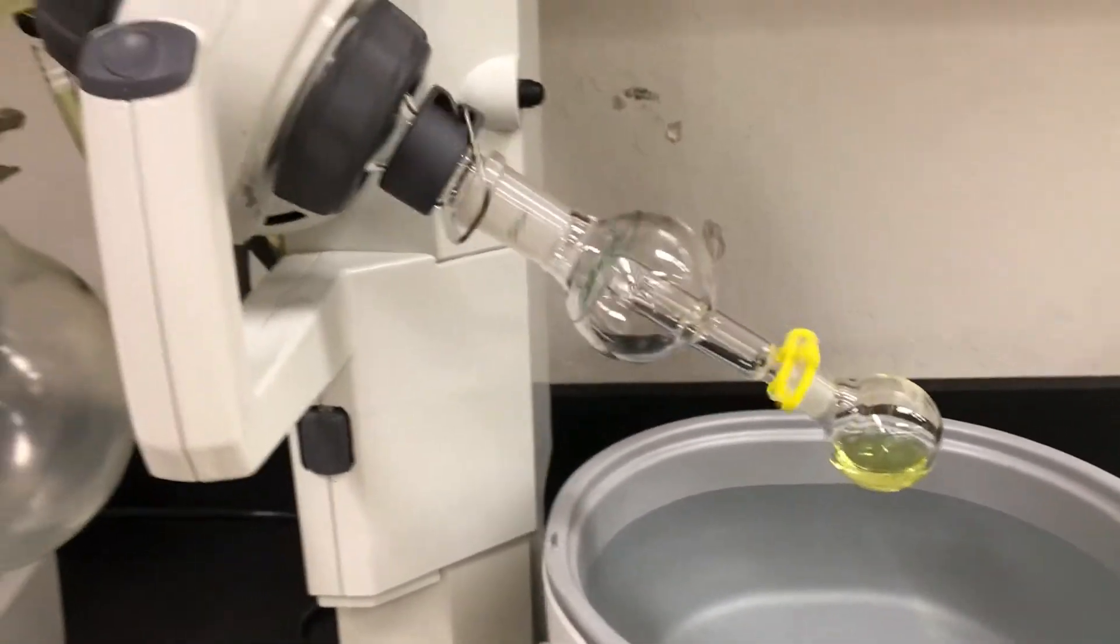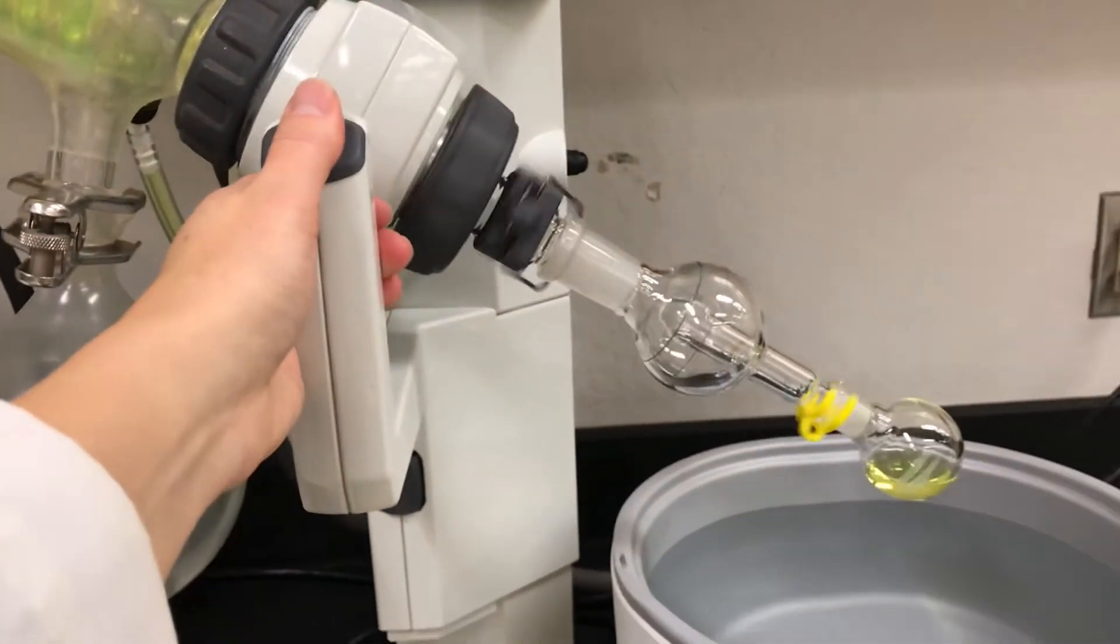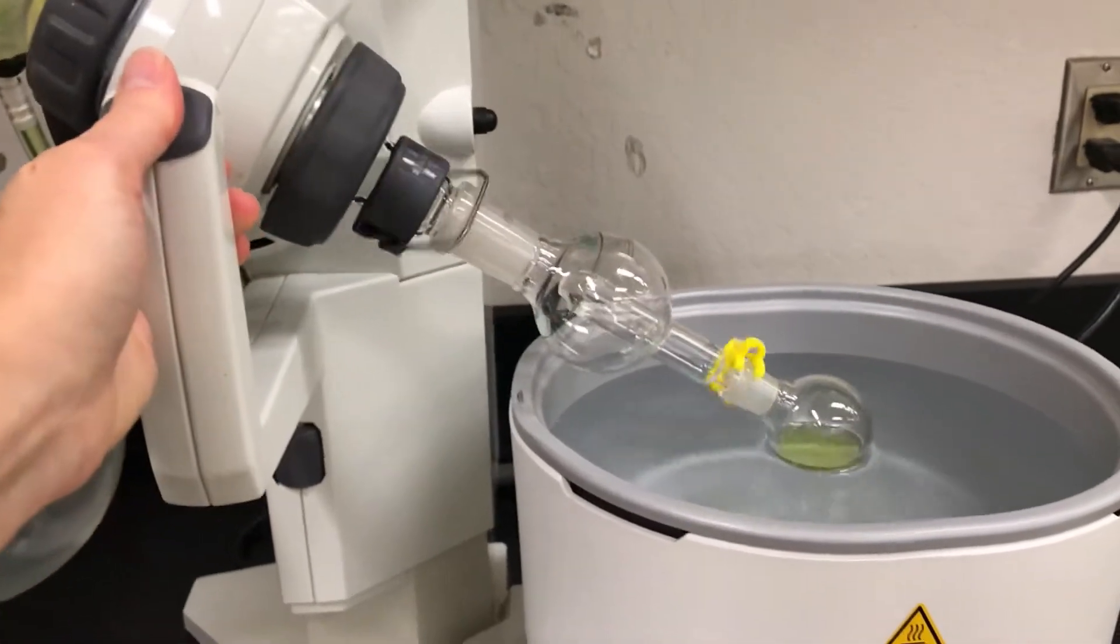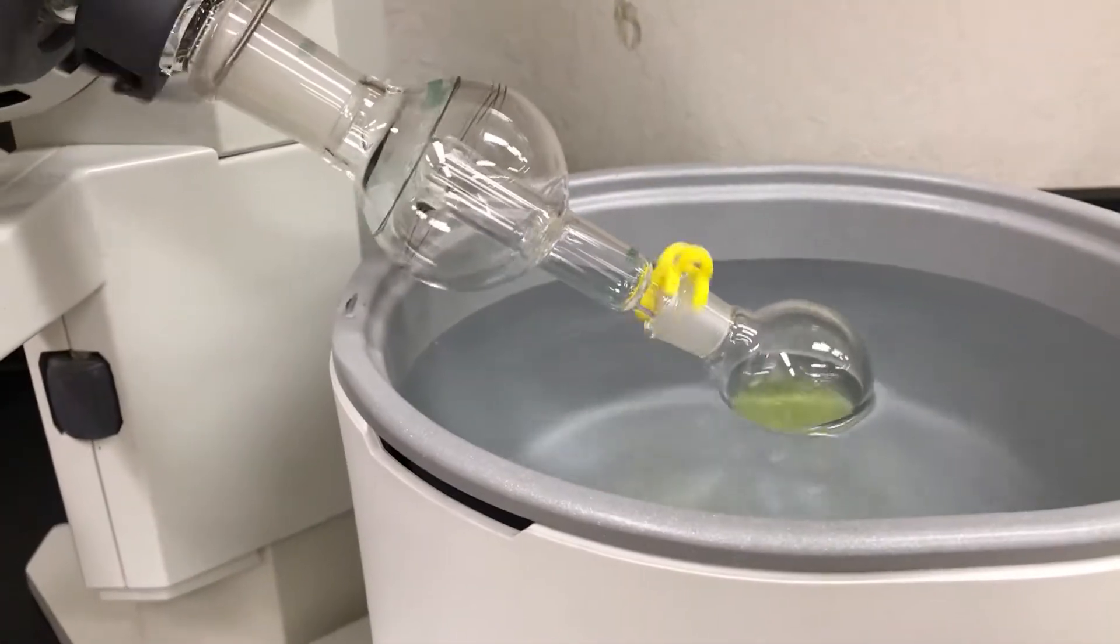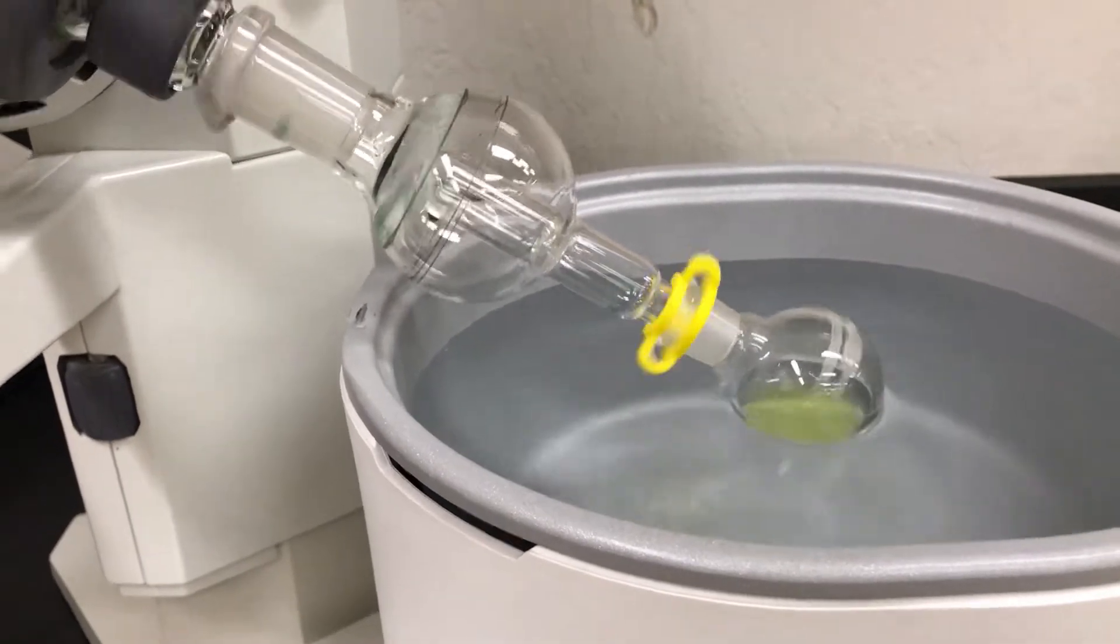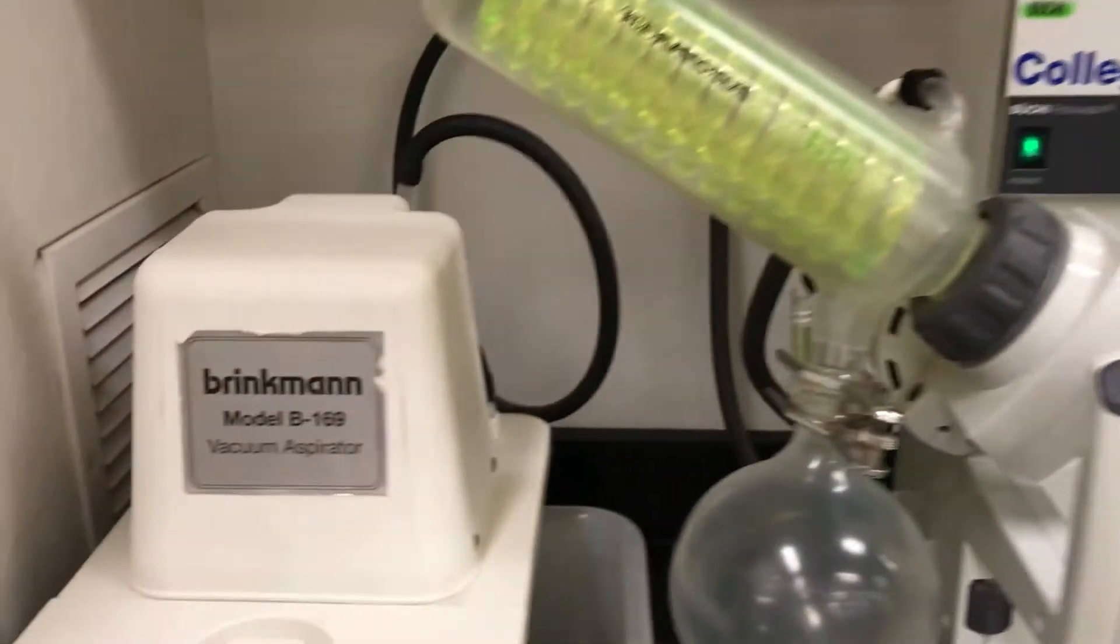You can then take that joystick looking arm and lower the flask into the water. And you do want to make sure that you don't lower it too much because you definitely don't want the joint where that little plastic clip is to be in the water.